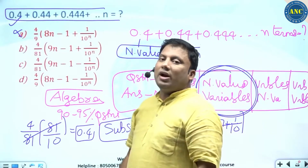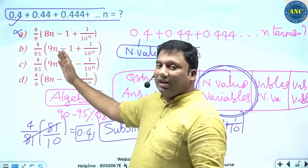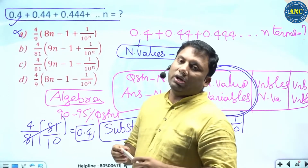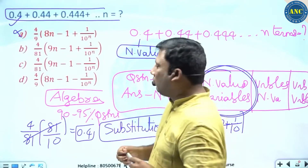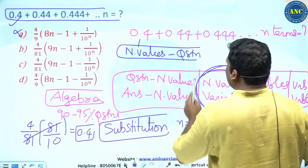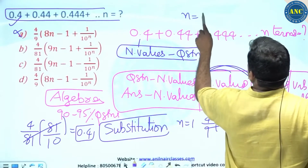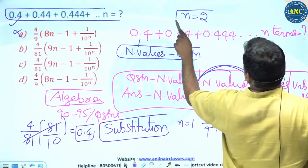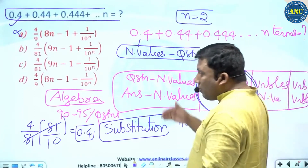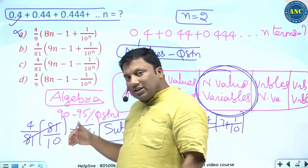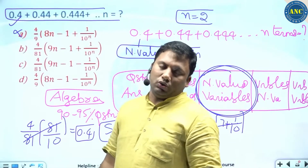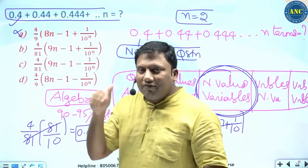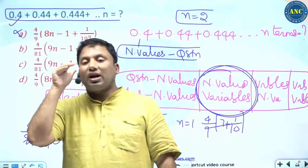What if more than one answer option is valid when you substitute n equal to 1? In such a case, put n equal to 2. If n equal to 1 gives more than one matching option, put n equal to 2.